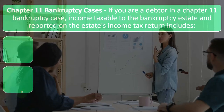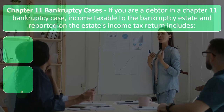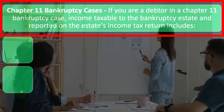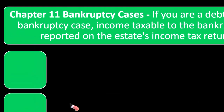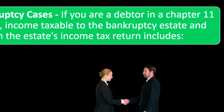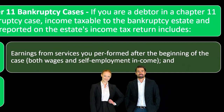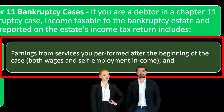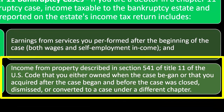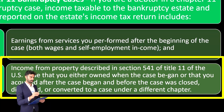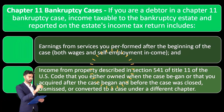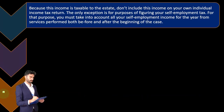Chapter 11 bankruptcy cases: if you were a debtor in a Chapter 11 bankruptcy case, income taxable to the bankruptcy estate and reported on the estate's income tax return includes earnings from services you performed after the beginning of the case — both wages and self-employment income — and income from property under Section 541 of Title 11 of the U.S. Code that you owned when the case began or acquired after it began, before the case was closed, dismissed, or converted.